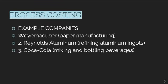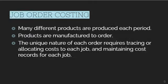Here are some sample companies that use process costing: Weyerhaeuser paper manufacturing, Reynolds Aluminum refining aluminum, and Coca-Cola mixing beverages. They use process costing because they are processing their products on their own.